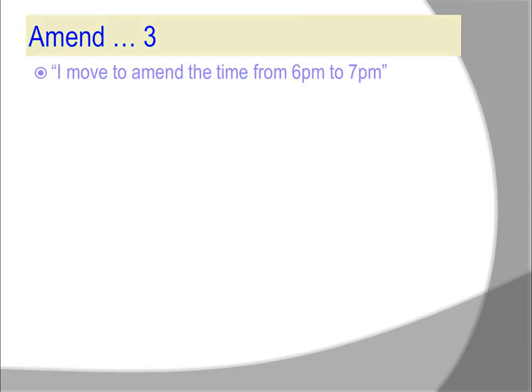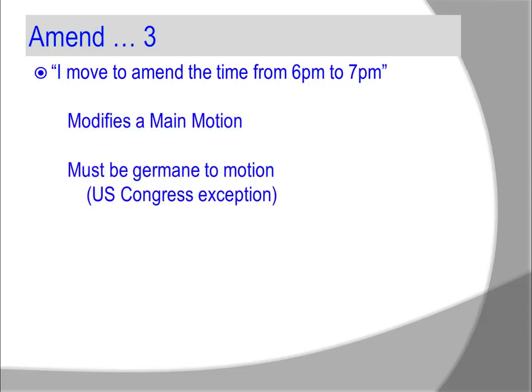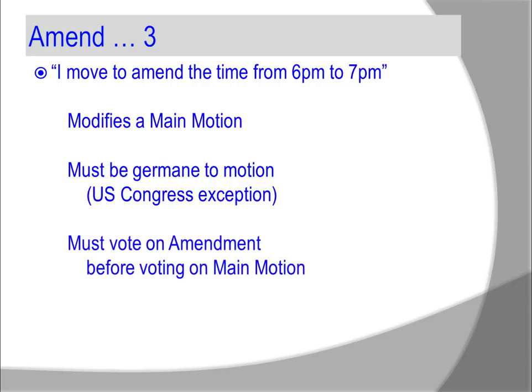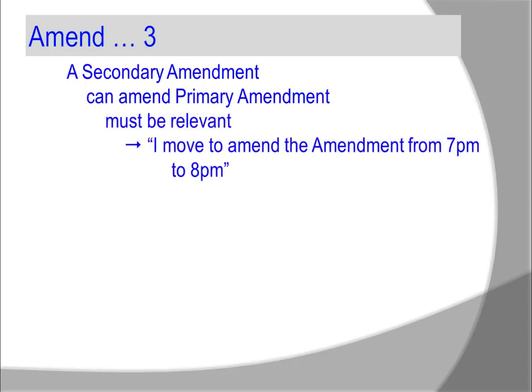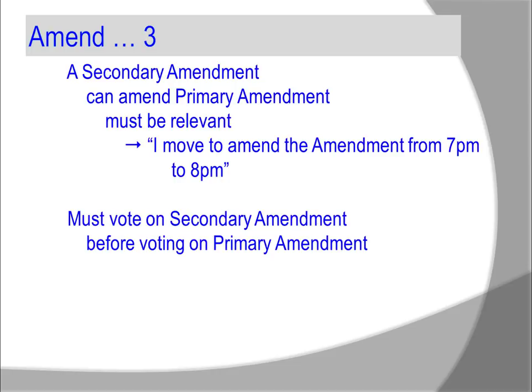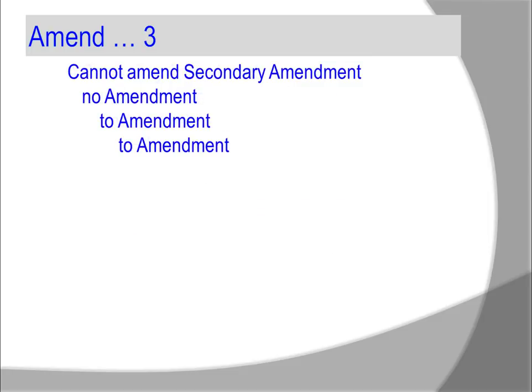How about amendments? 'I move to amend the time from 6 p.m. to 7 p.m.' This modifies a main motion. It must be germane to the motion — the exception is U.S. Congress. If there is a motion to purchase a lectern, it is out of order to have an amendment to chop down a cherry tree. There must be a vote on the amendment before voting on the main motion. A secondary amendment can amend a primary amendment, but it must be relevant: 'I move to amend the amendment from 7 p.m. to 8 p.m.' There must be a vote on the secondary amendment before voting on the primary amendment. There cannot be an amendment to the secondary amendment — no amendment to amendment to amendment.